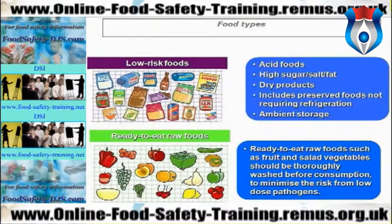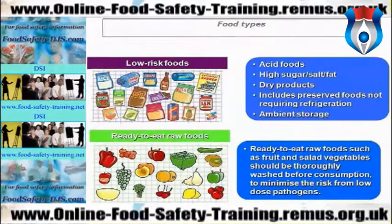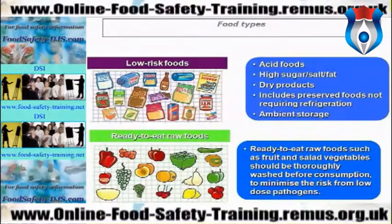Other food types include low-risk foods and ready-to-eat raw foods. Low-risk foods include acid foods, foods with high sugar, salt or fat content, dry products, preserved foods not requiring refrigeration, and foods which can be kept at ambient storage or room temperature. These are classes of foods which will not support the growth of pathogenic microorganisms.